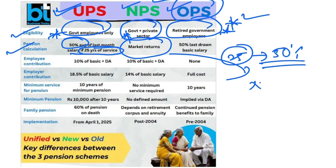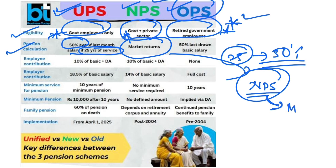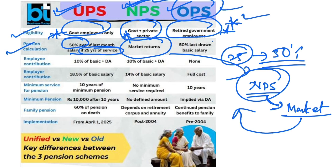That means NPS is market-linked. The NPS contribution was received from both employees and employers, and that contribution was invested in the market, so the return of the market determines the pension. This is why NPS was a market-linked scheme with no assured income. And the Old Pension Scheme provides 50% of the last drawn basic salary.